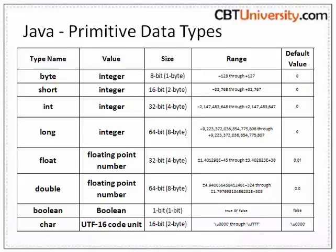Byte: the byte data type is an 8-bit signed 2's complement integer, and it has a default value of 0. Short: the short data type is a 16-bit signed 2's complement integer.